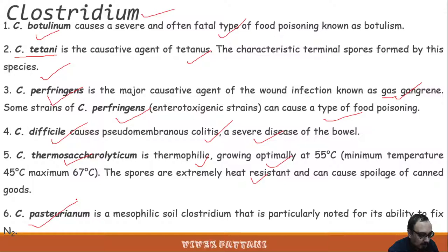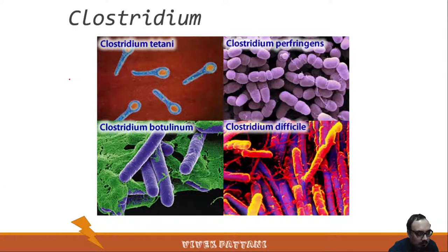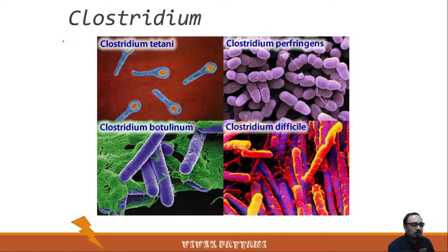Clostridium pasteurianum is a mesophilic soil Clostridium particularly noted for its ability to fix nitrogen. Please have a look at the photographs of all four types of Clostridium: Clostridium tetani, Clostridium perfringens, Clostridium botulinum, and Clostridium difficile.